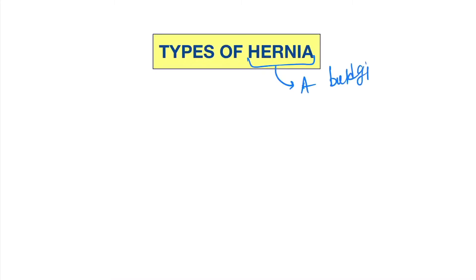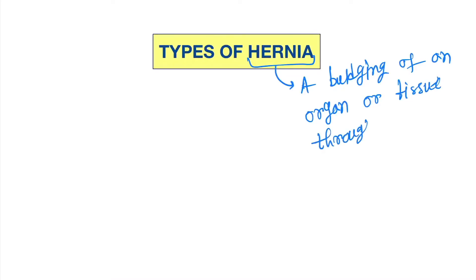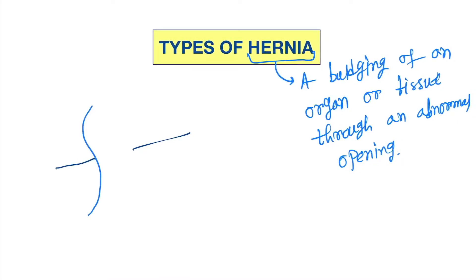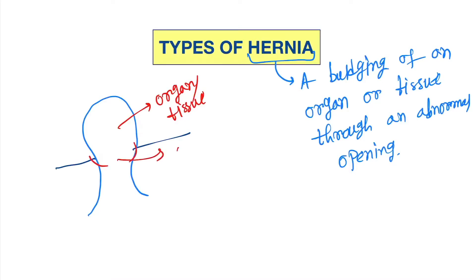Hello friends, today our topic is the types of hernia. Hernia is a bulging of an organ or tissue through an abnormal opening. Like this is the abnormal opening and the tissue or organ will bulge through it, for example in the abdomen.